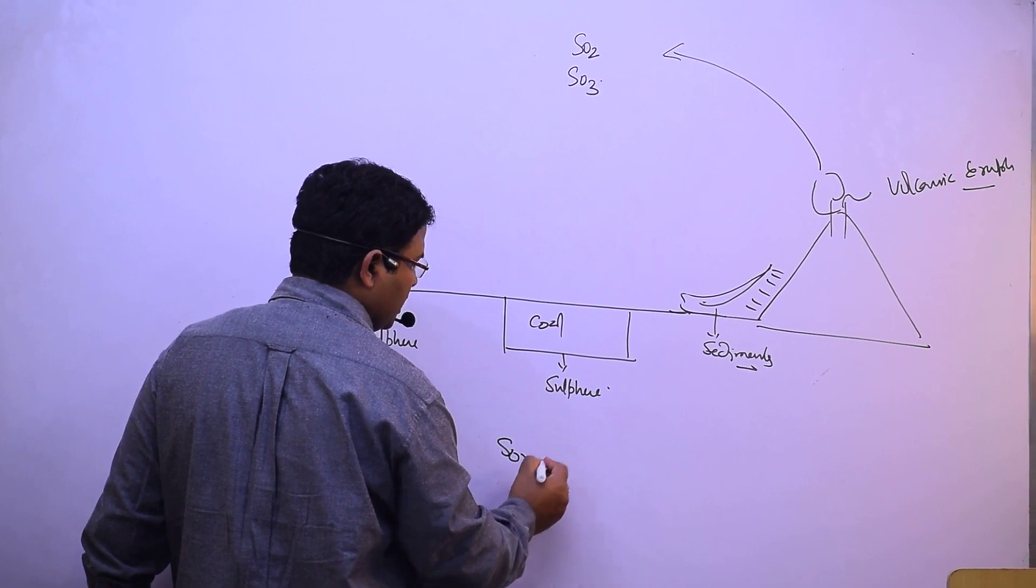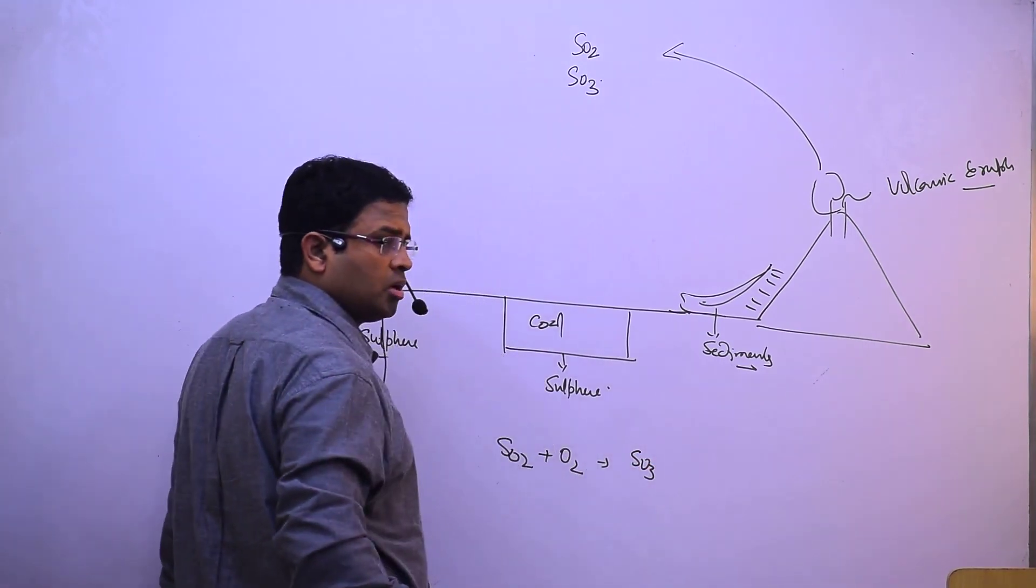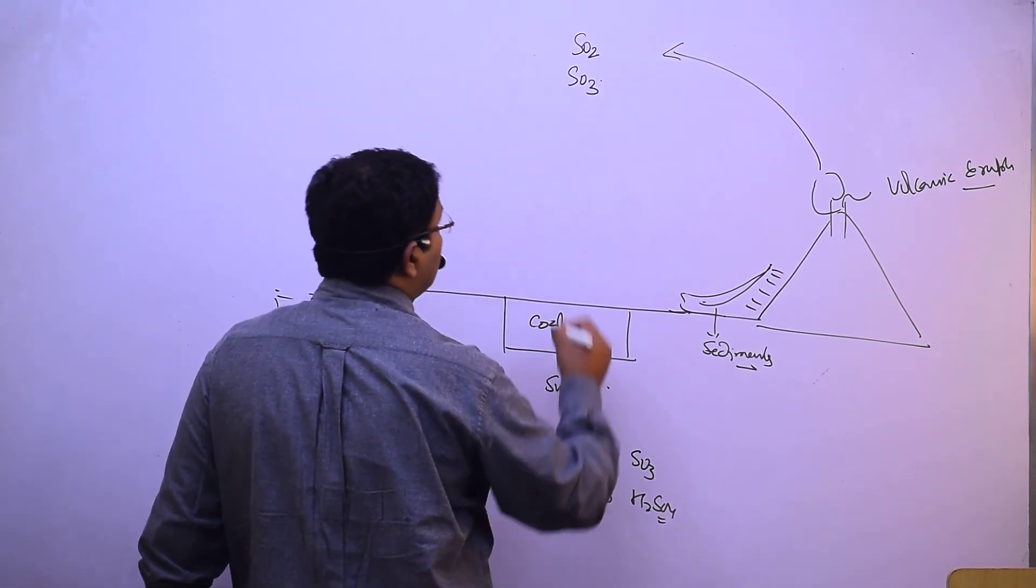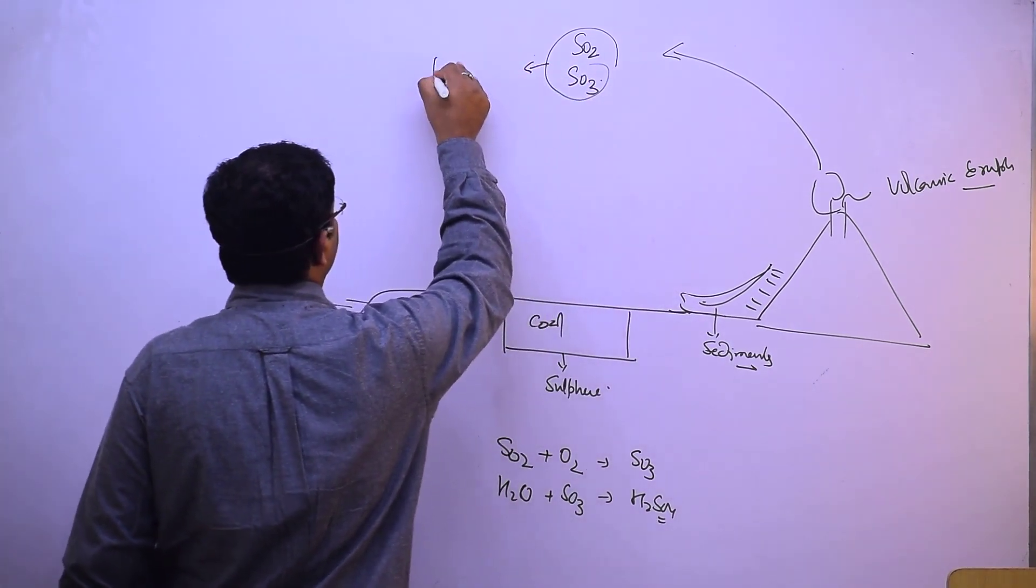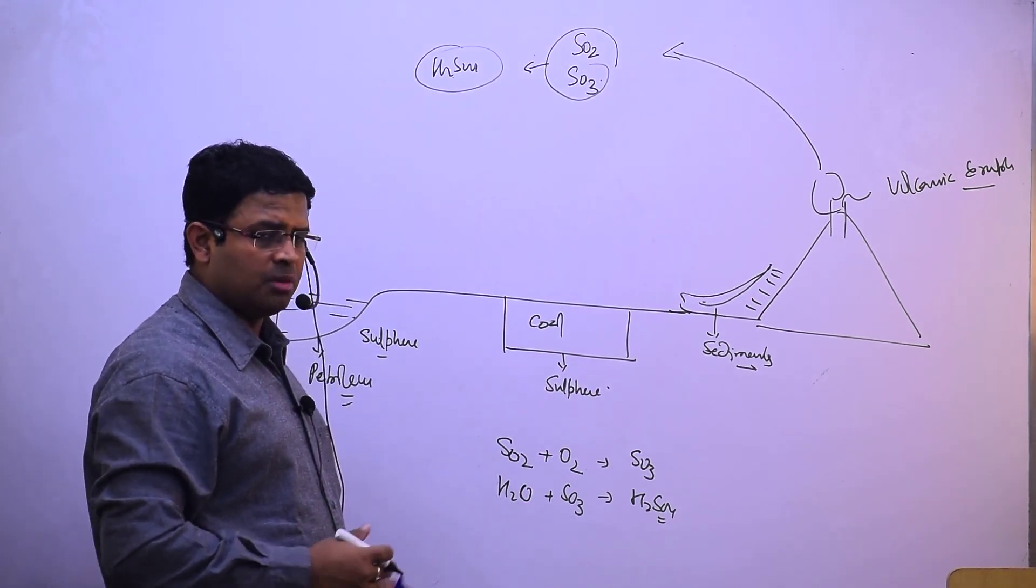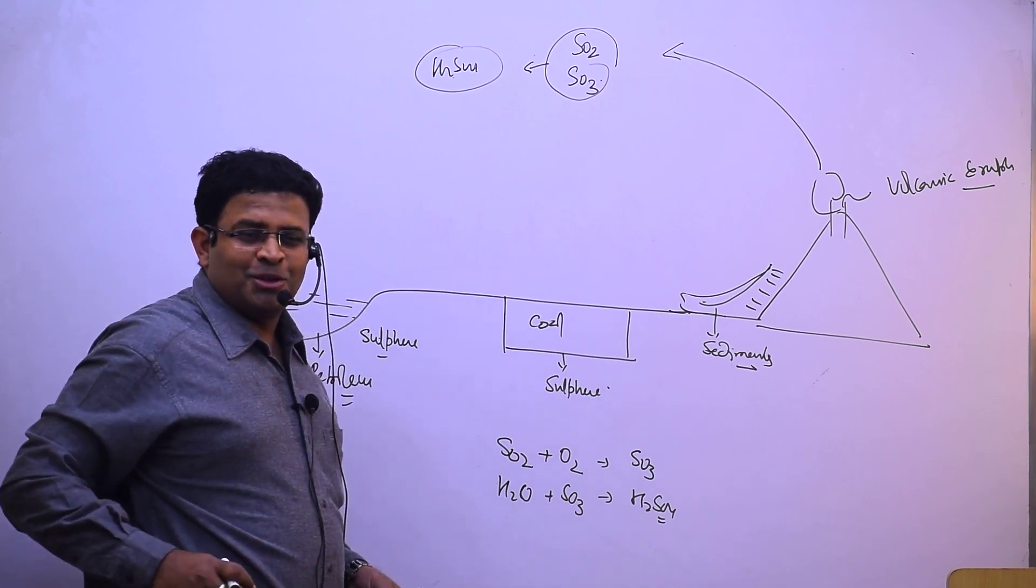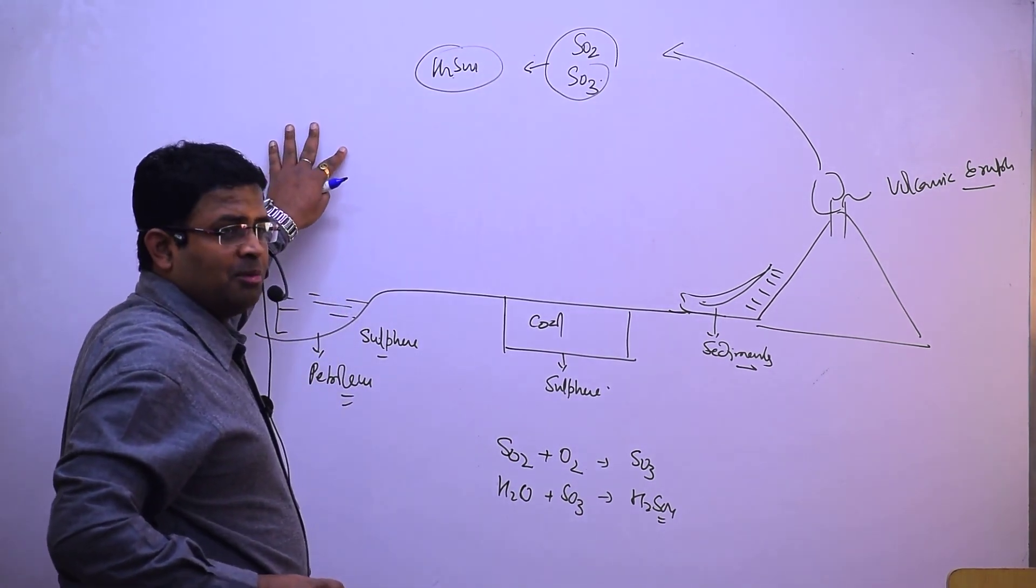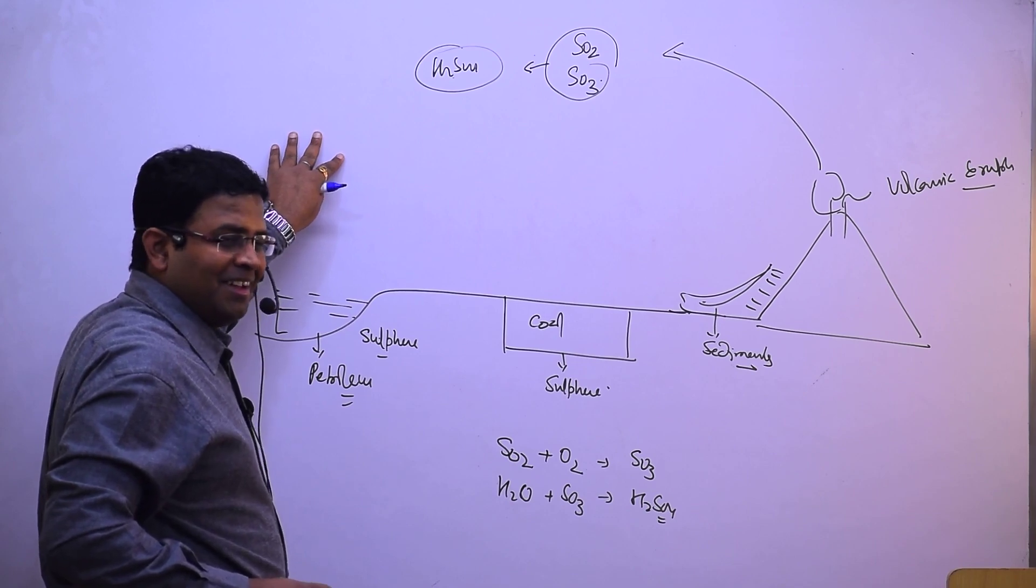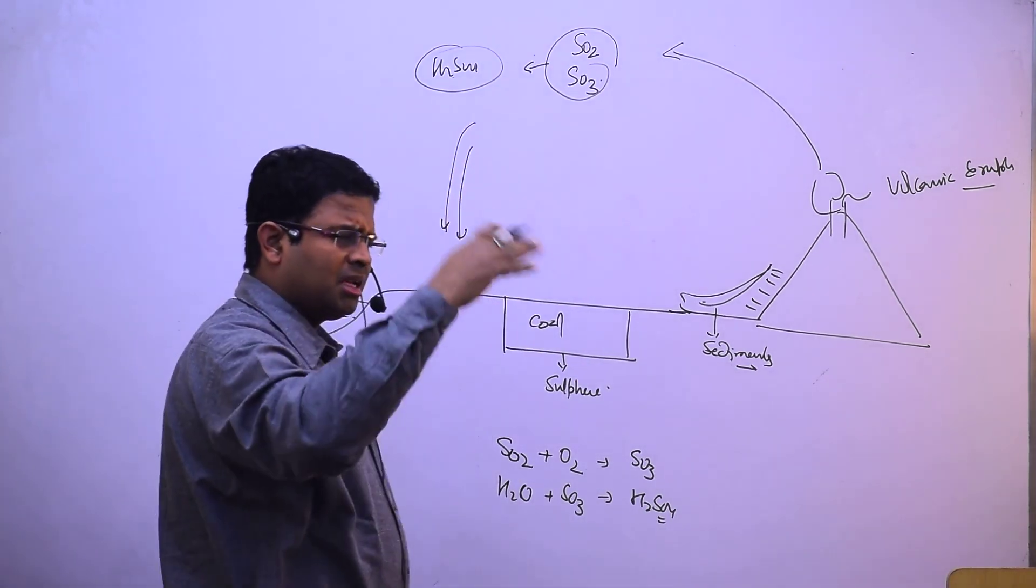Sulfur dioxide reacts with oxygen to make sulfur trioxide. This sulfur trioxide reacts with water and we get H2SO4, diluted sulfuric acid, which will affect our body.